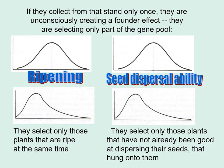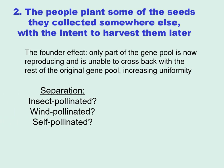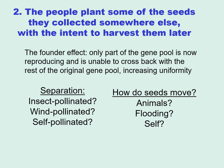If you collect from that stand only once, you're unconsciously creating a founder effect — selecting only a part of the gene pool: only those plants that are ripe at the same time and that held onto their seeds. Now, if you ate those seeds, domestication is not going to occur. But if you save those seeds and plant them — particularly somewhere else with the intent to harvest them later — you have created the founder effect. Only part of the gene pool is now reproducing, and because you've taken them away from the original population, those plants are unable to cross back with the rest of the original gene pool, which would increase uniformity.